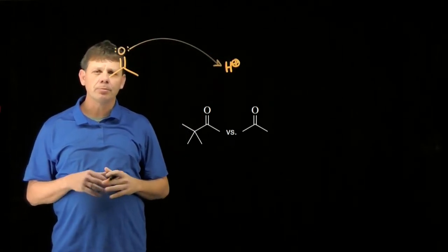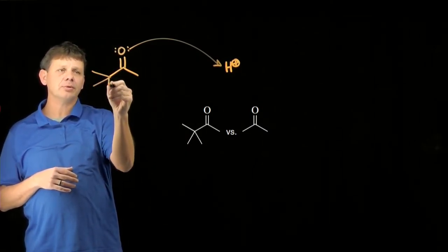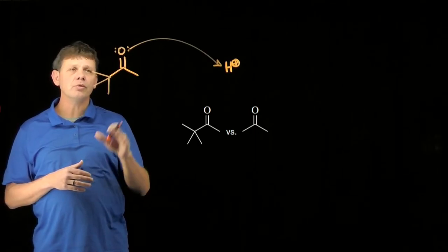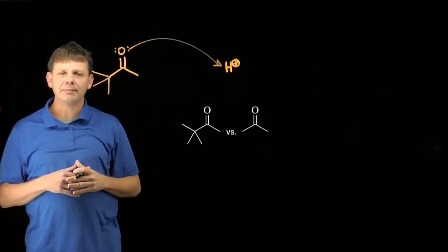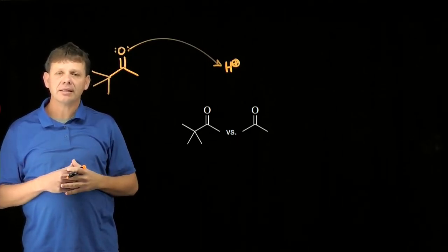Because that t-butyl group is so far removed from where that happens—so this is acetone, let's draw in the tert-butyl group—because it's so far removed from where that protonation is happening, that steric hindrance is not enough to dramatically change the rate.